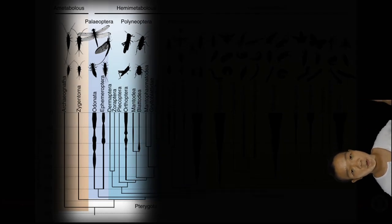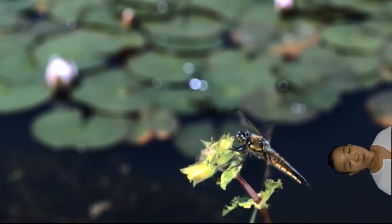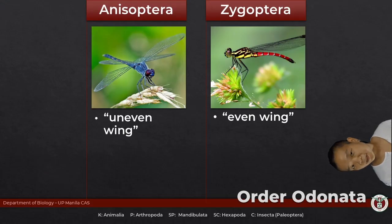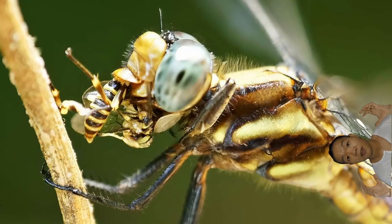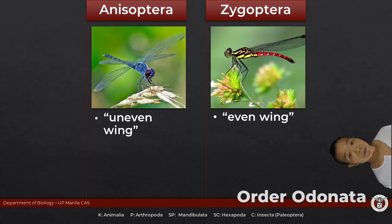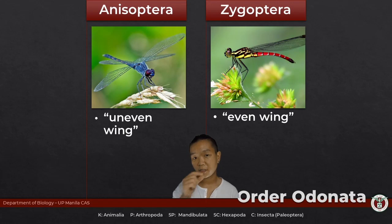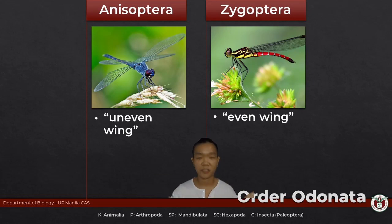Palaeoptera literally translates to 'old wing.' Insects under this clade are not able to fold their wings neatly above their abdomen, and their wings can move independently. The most recognizable group would be Order Odonata — the toothed ones — with strongly toothed mandibles. Looking at their wings, there's a rectangular patch near the tips called the stigma. Order Odonata has two main groups: Anisoptera, the dragonflies, and Zygoptera, the damselflies. Dragonflies have broader hind wings than their forewings, whereas for damselflies, the wings are more or less even.